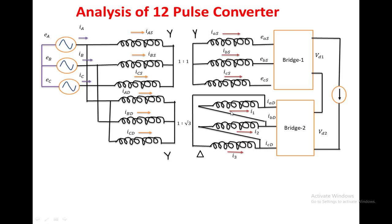Here we are given some nomenclature. The current passing through the primary winding of the star-to-star transformer is denoted with subscript S. The primary winding of the star-to-delta transformer uses subscript D. The turns ratio of the star-to-star transformer is 1:1, whereas the star-to-delta transformer is 1:√3, to maintain the same voltage and current properties in both primary and secondary.